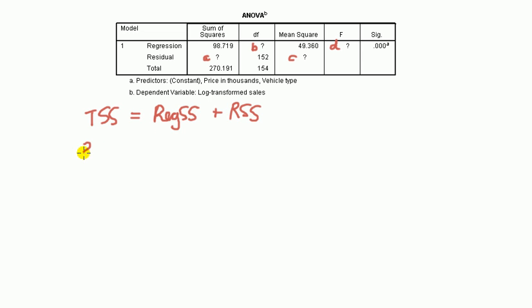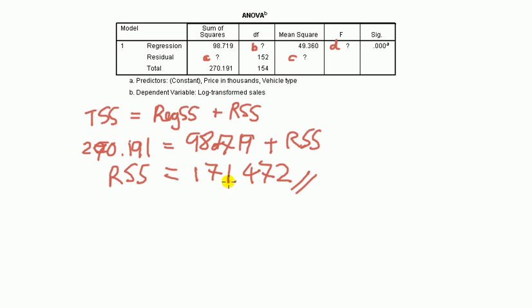So, regression sum of total sum of squares, we're told, is 270.191 equals regression sum of squares. So, regression sum of squares is 98.719, plus RSS. Therefore, just take this to the other side. Therefore, RSS must be, get your calculator out, it must be 171.472. So, that's the first one, and we'll use the fact TSS equals regression sum of squares plus residual sum of squares.